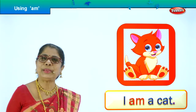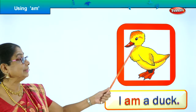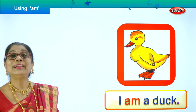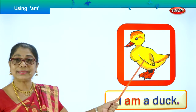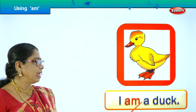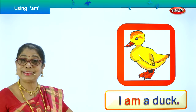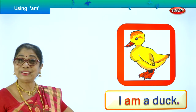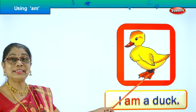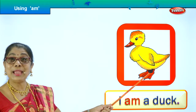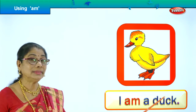Let's go to the next picture and look at the use of 'am' over there. What picture is this? Duck — yes, beautiful duck! What does the duck say? 'I am a duck.' What is the color of the duck? Yellow. Look at his beak, look at his webbed feet. 'I am a duck' — very proud to say 'I am a duck.'